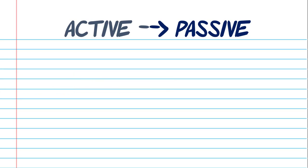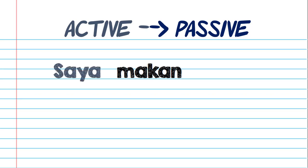For example, 'makan,' which means 'eat.' If you want to make an active sentence with the word makan, we can say 'saya makan singa,' which means 'I eat a lion.'